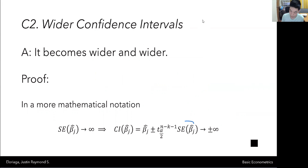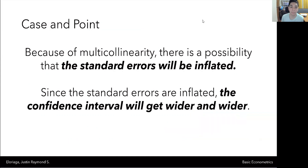So notice that as the standard error approaches a high number, the confidence interval will increase accordingly. Because of multicollinearity, the standard errors are inflated because the variance has been inflated, and therefore the confidence interval will get wider and wider. That's the second consequence.